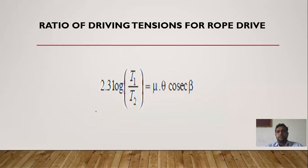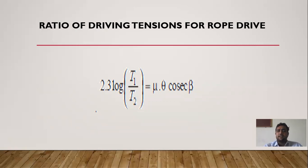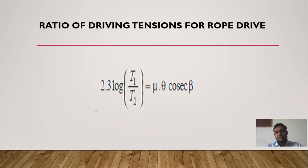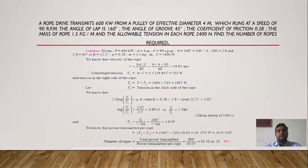The driving tension ratio for rope drive is given by the formula: 2.3 log(T1/T2) = μθ, where T1 is the tight side tension and T2 is the slack side tension. When the groove angle is considered, the formula becomes: 2.3 log(T1/T2) = μθ cosec β, where β is the angle of groove. This gives the ratio of driving tension from one pulley to another for rope drives.